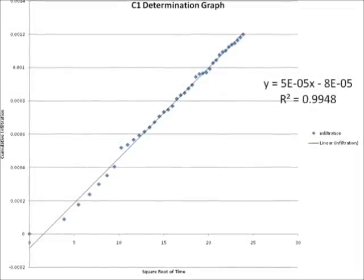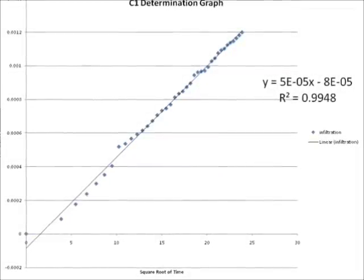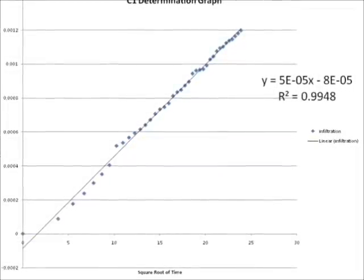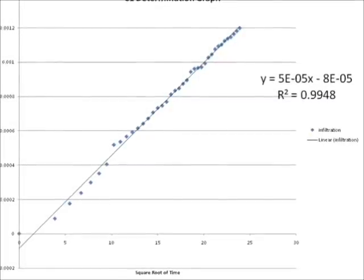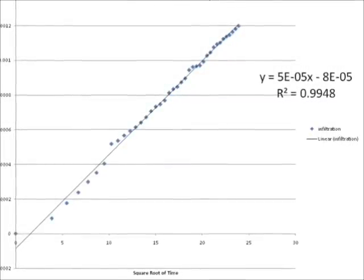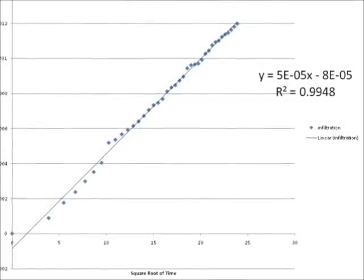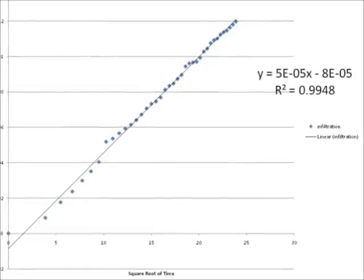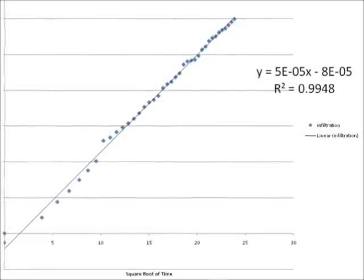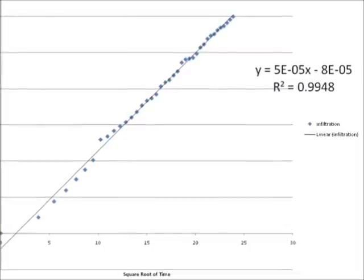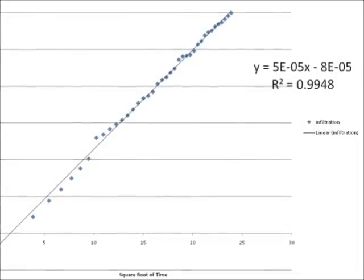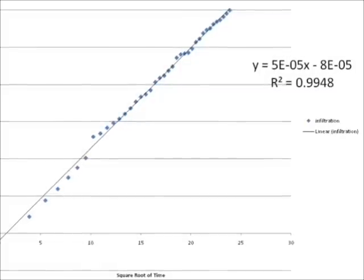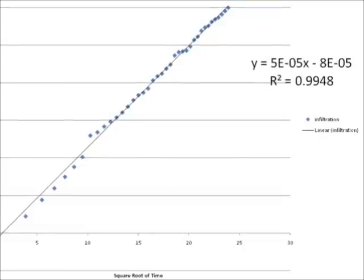This is a graph plotting the square root of time against infiltration. Infiltration is found by first arriving at cumulative volume and dividing this by the area of the disk. Cumulative volume is the total volume of water which has entered the soil column. The square root of time is simply the square root of the cumulative time steps.